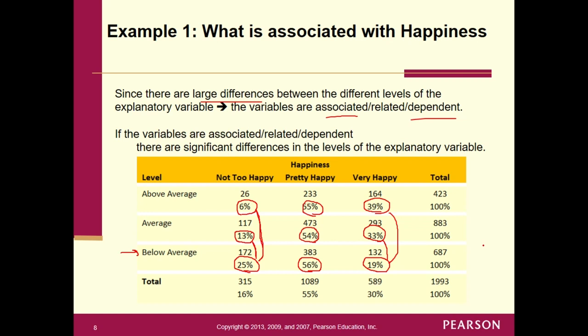Now this is a very obvious example. Not everything is this obvious. And so we have a hypothesis test that runs through five steps and eventually concludes whether these variables are related to one another.